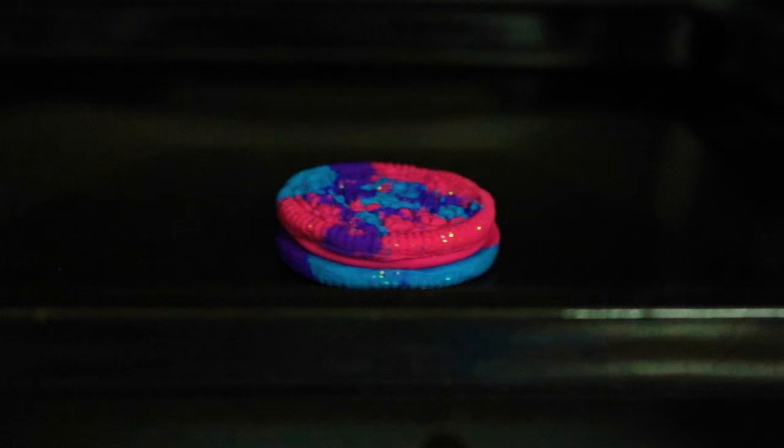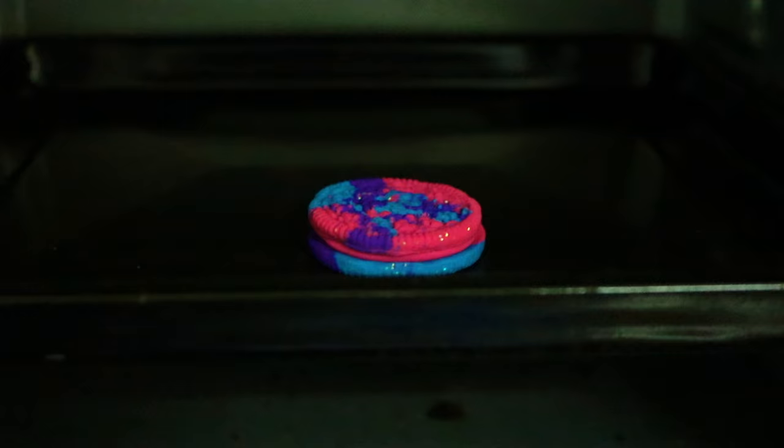Place it in between 2 Oreo pieces before putting the whole thing in the oven and bake for 20 minutes at 250 degrees.